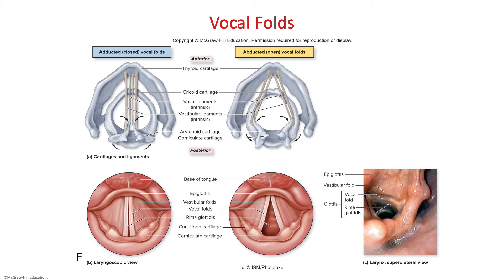Here are the vocal folds. You can see the rima glottidis is the space in between, also referred to as the glottis as listed on page 181. You also have your vestibular folds, also known as the false vocal folds, and then the vocal folds themselves are known as the true vocal cords or vocal folds.